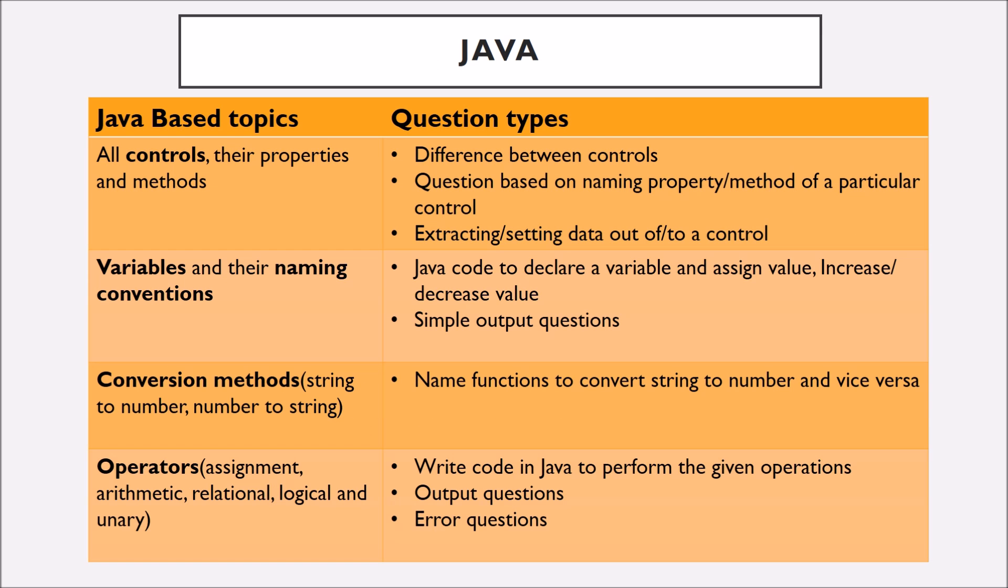Now let's discuss what all you need to revise in the topic Java. Please revise all the controls, their properties and methods. The question type can be difference between controls, question based on naming property or naming a method of a particular control. You can also be asked for extracting or setting data out of or to a control.